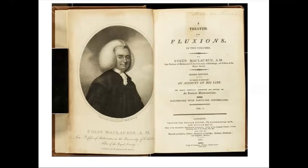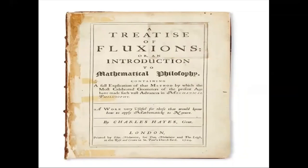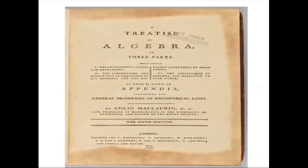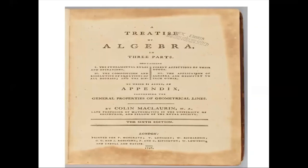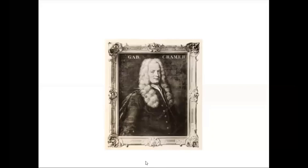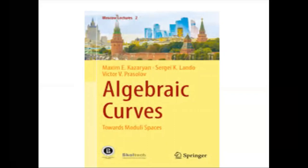In the 1730s, McLaurin wrote the Treatise of Algebra. It contains the first published results on determinants, proving Cramer's rule for two-by-two and three-by-three systems and indicating how the four-by-four case would work. Swiss mathematician Gabriel Cramer gave the general rule for n-by-n systems in his paper Introduction to the Analysis of Algebraic Curves in 1750. In his words, one finds the value of each unknown by forming n fractions of which the common denominator has as many terms as there are permutations of n things. That was his theory, but no proof for this theory was given.